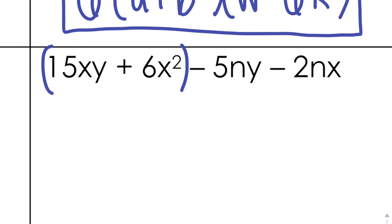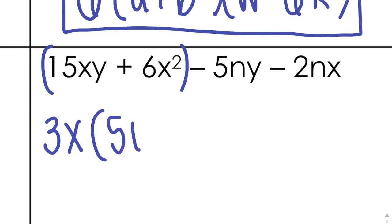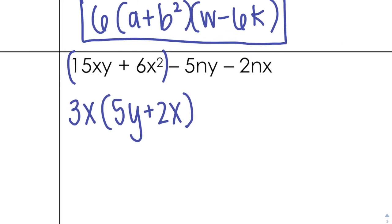15 and 6 — I can take out a 3, and they both have an x, so I take out an x. From 15xy, if I take out 3x I'm left with 5y; in the second half I'm left with 2x. Remember, whatever I take out of the second half, my goal is to be left with 5y plus 2x, so I need to take out a negative to turn those into positives.